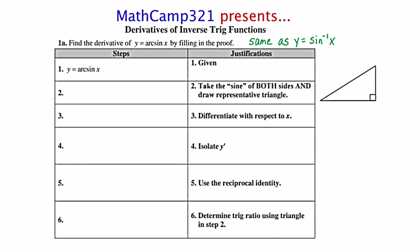Step two says take the sine of both sides and then draw a representative triangle. So let's start by taking the sine of the left side, leaving us with sine y. When I take the sine of the right-hand side, I get the sine of the arc sine of x. Taking the sine of the arc sine of x is very similar to squaring a square root. These two functions are inverses of each other and essentially cancel each other out. So if I'm taking the sine of the arc sine of x, I'm simply left with x.